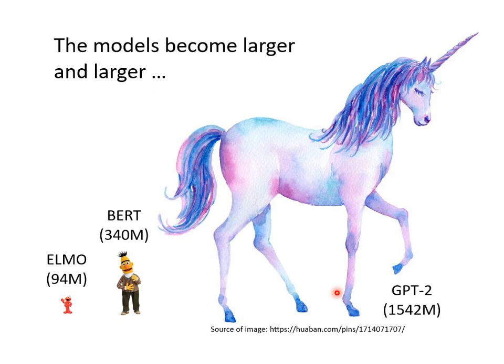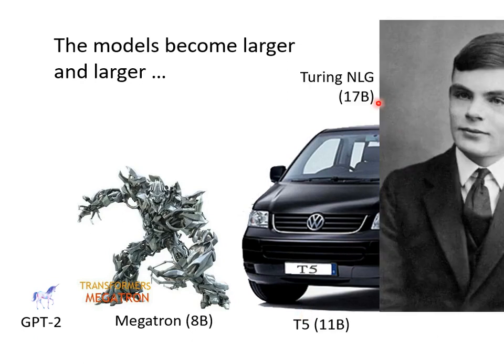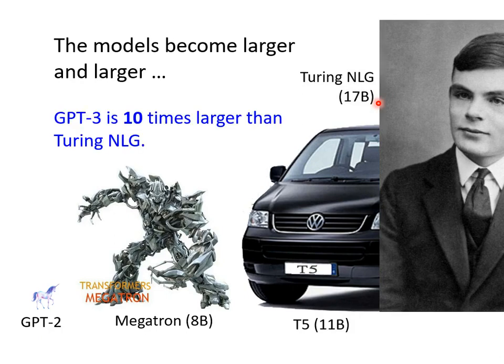Even GPT-2 is not too big. Megatron has 8 billion parameters, about 8 times that of GPT-2. Later there was T5 — by the way, there is a Ford car also called T5, although T5 is made by Google and has nothing to do with the car. T5 has 11 billion parameters. But it's nothing: Turing NLG has 17 billion. And that's nothing either — GPT-3 is 10 times as big as Turing NLG.